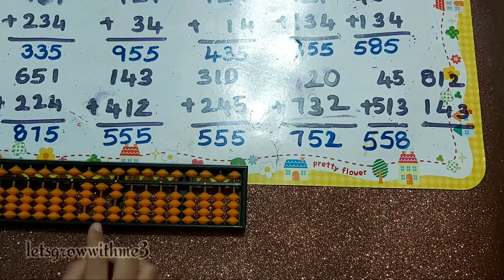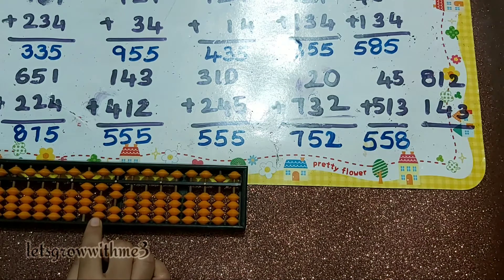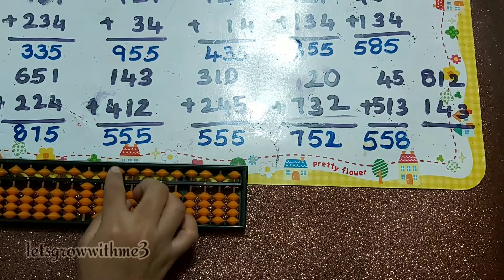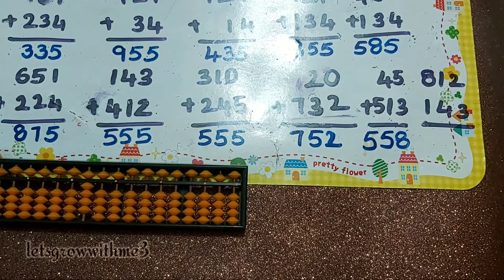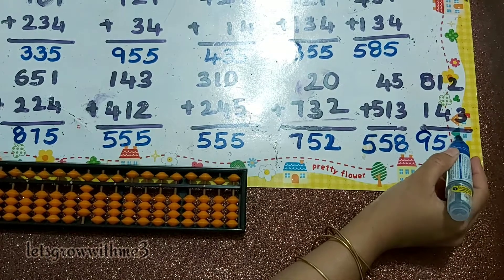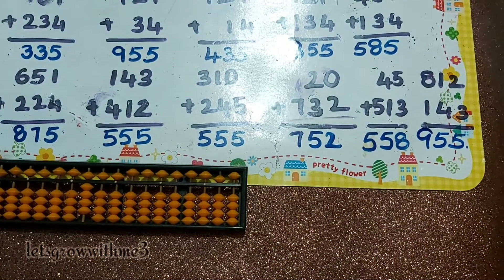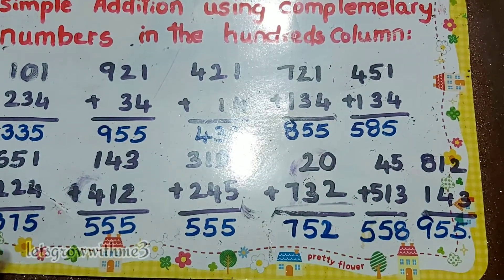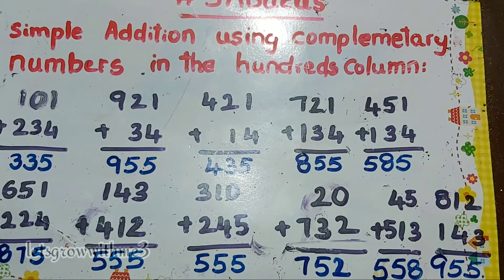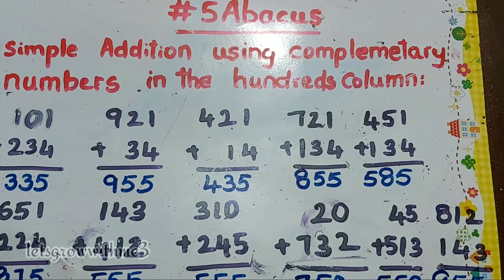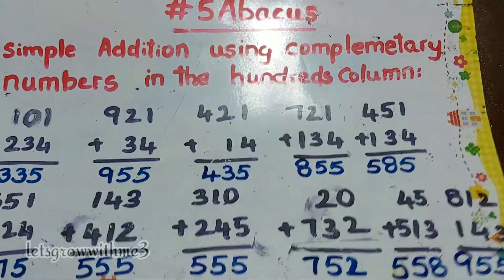Last question: 812 plus 143. Plus 1, so plus 4 — how to add: plus 4, plus 5 minus 1. Plus 3 — plus 5 minus 2. So our answer is 955. Okay, this one is finished. Next we will do some more problems.